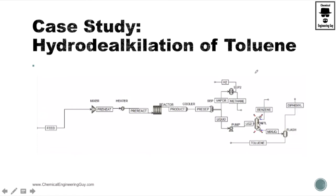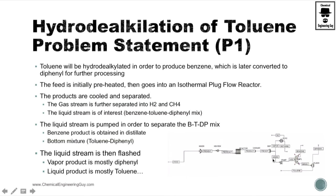At the end of this case study we must end up with the flow sheet working as follows. The main objective is to convert toluene into benzene and then react benzene to form diphenyl. Hydrodealkylation implies that we are going to remove an alkyl group from the toluene. Toluene is a benzene molecule with a methyl branch.